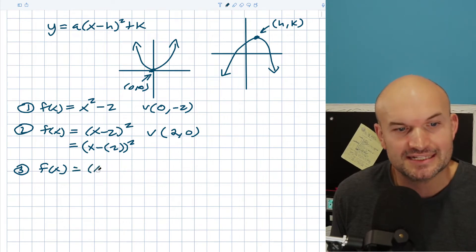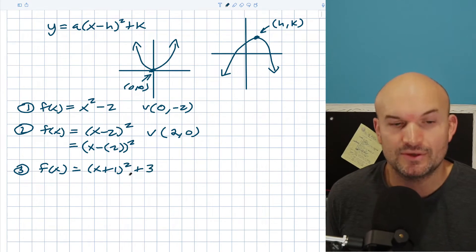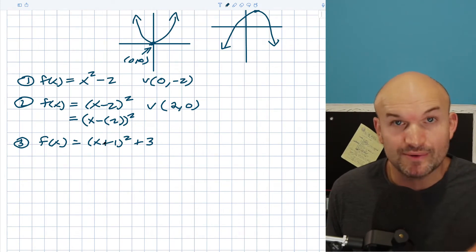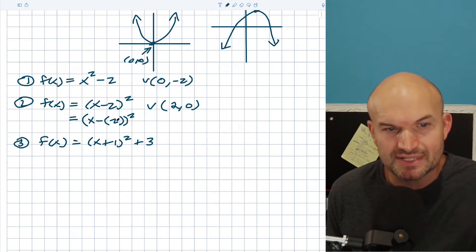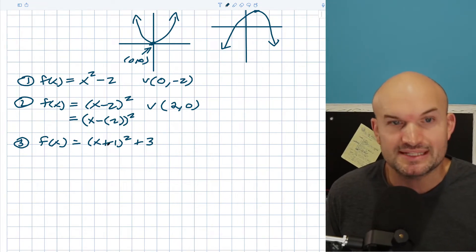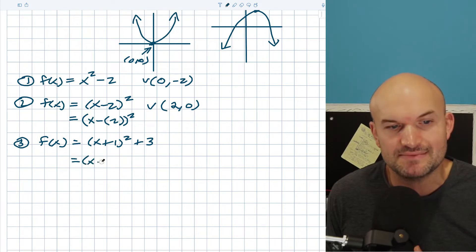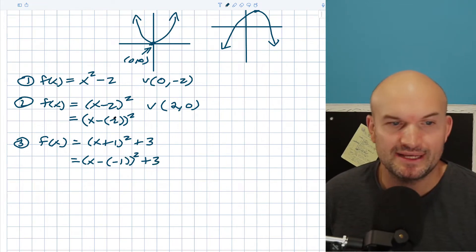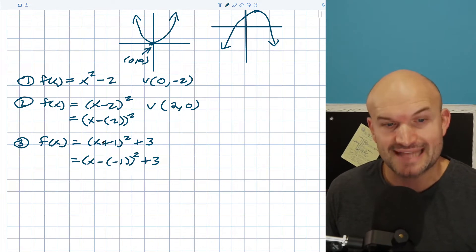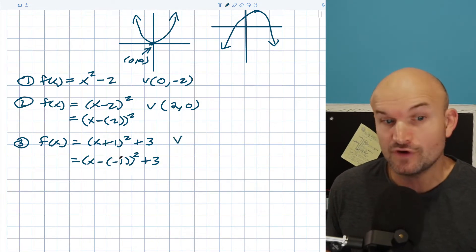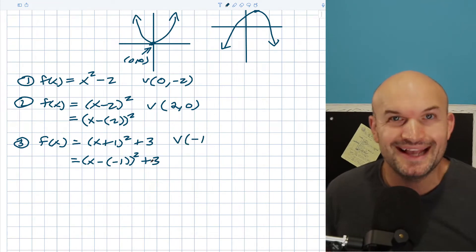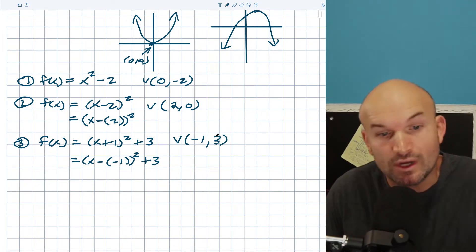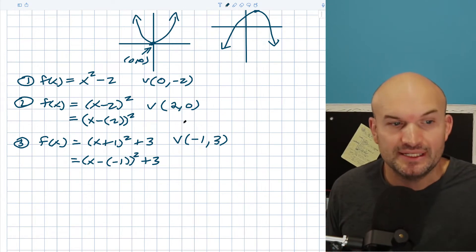Let's do one now where we have both transformations. For example, f(x) = (x + 1) quantity squared plus 3. I need to rewrite this as x minus negative 1 quantity squared plus 3, because minus a negative is the same as adding. So the vertex is (-1, 3). All that's doing is shifting the graph one unit to the left and three units up. That is your new vertex.